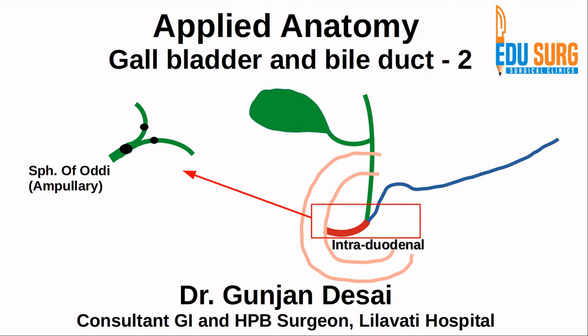Hello everyone and welcome to Edding Church Clinics. I am Dr. Gunjan Desai and today we are going to continue our discussion on the applied anatomy of gallbladder and bile duct. This is part 2. In the previous part we saw in detail the anatomy and variations in gallbladder anatomy as well as the intrahepatic biliary tree. In this video we will continue and go towards the extrahepatic bile duct, the common channel or ampulla, vascular supply, and lymphatic drainage of this area.